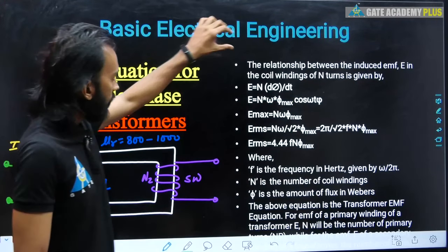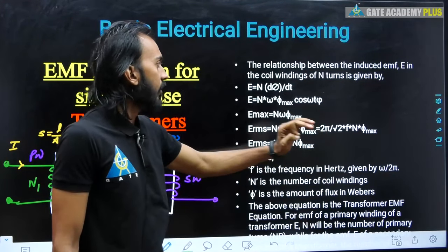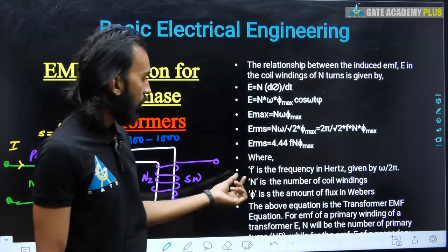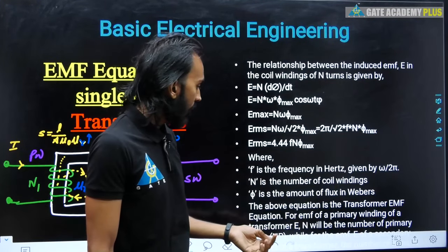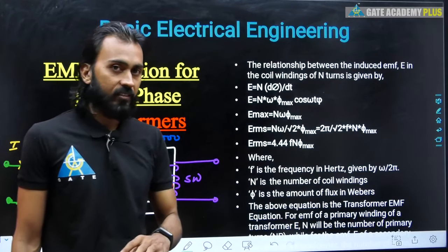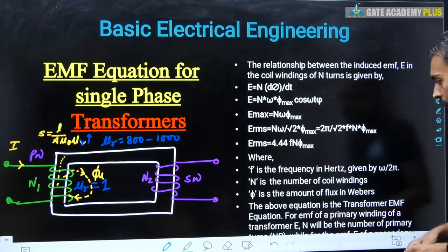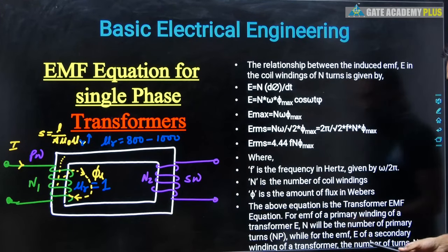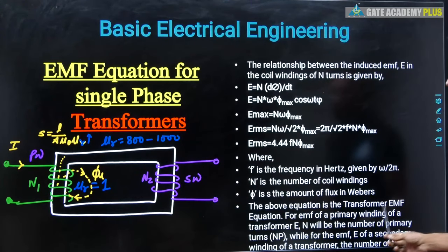The relation between the induced EMF E in a coil winding of N turns is given by Eᵣₘₛ = 4.44FφₘN, where F is the frequency in hertz (= ω/2π), N is the number of coil windings, and φ is the amount of flux in webers. This is the transformer EMF equation — for primary winding use Np (N1), for secondary winding use Ns (N2).